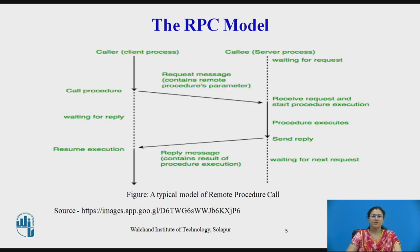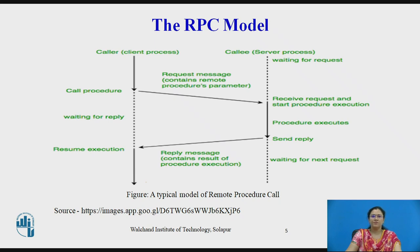Now we will see the RPC model. This is a typical model of Remote Procedure Call. The caller, which is commonly known as the client process, sends a call — that is, a request message — to the callee, which is commonly known as the server process, and waits for a reply message. The request message contains the remote procedure's parameters, among other things.